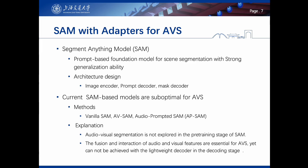Another contribution of this paper is adapting the Segment Anything Model (SAM) to the AVS task. SAM is a recently proposed foundation model for scene segmentation in the computer vision community. It is prompt-based and has strong generalization ability. Its architecture consists of an image encoder, a prompt decoder, and a mask decoder.